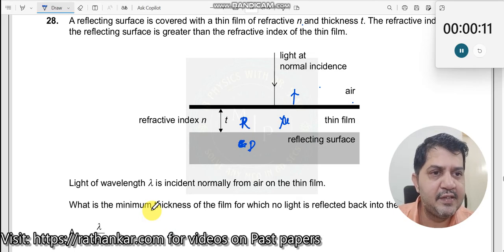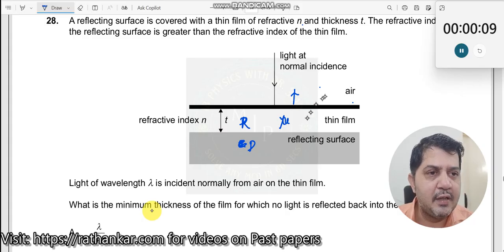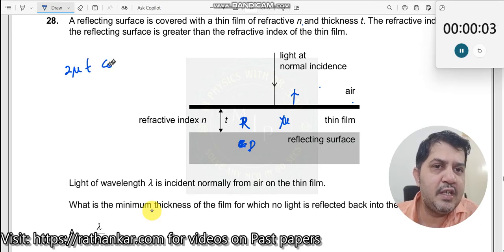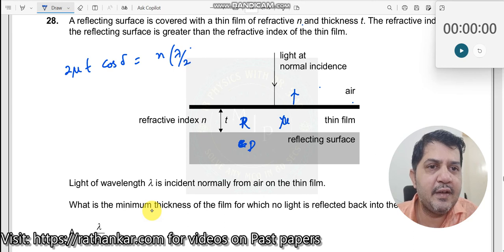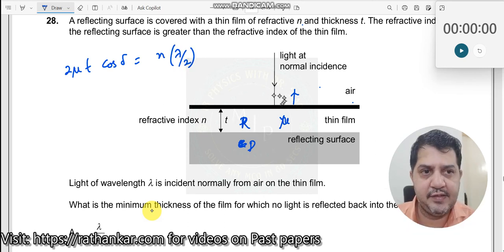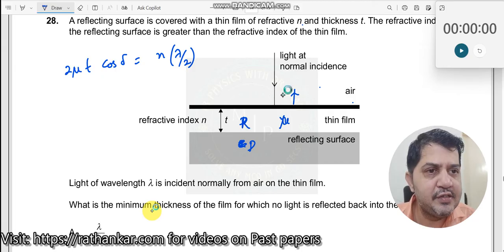For this condition to happen, let us use the equation. What is the equation? This is thin film interference. We have 2 mu T cos delta equals n times lambda divided by 2. This is the condition for destructive interference.